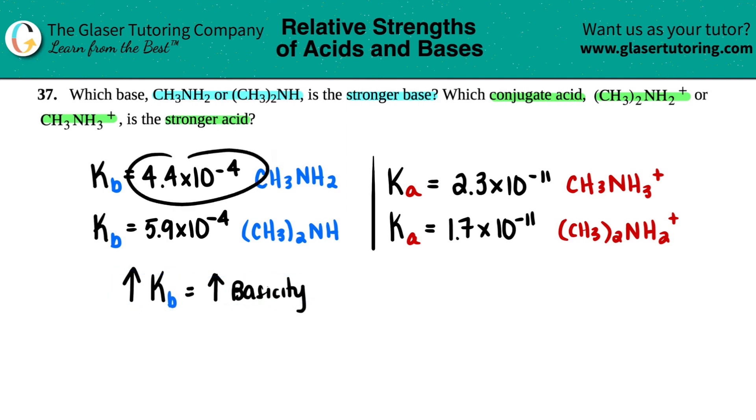Well, at 4.4 times 10 to the negative fourth and 5.9 times 10 to the negative fourth, this one is the higher value. So if 5.9 times 10 to the negative fourth beats out 4.4 times 10 to the negative fourth, that means that (CH3)2NH is a stronger base.